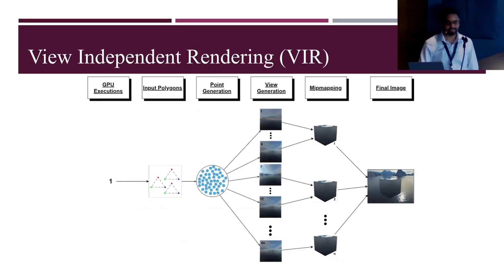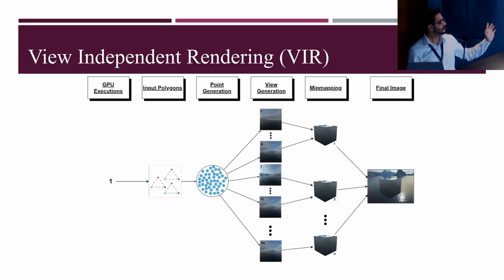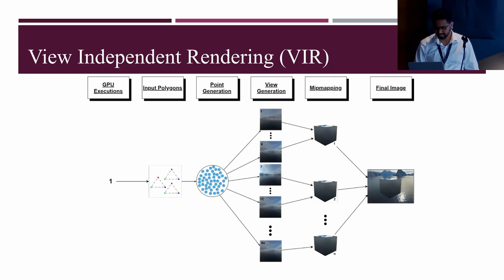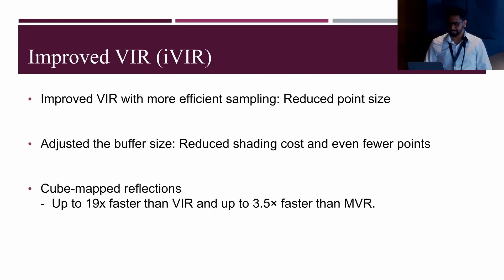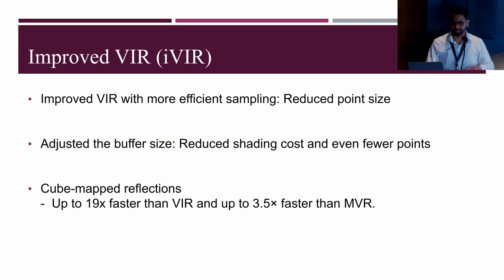Although VIR can be inefficient when views are diverse, like in environment mapping, or when off-screen buffer resolutions differ. We improved VIR and called it IVIR — improved view-independent rendering — implementing more efficient sampling that accounts for point size and buffer size, reducing both point count and shading cost. We achieved a speedup of 19x over original VIR and 3.5x over MVR.